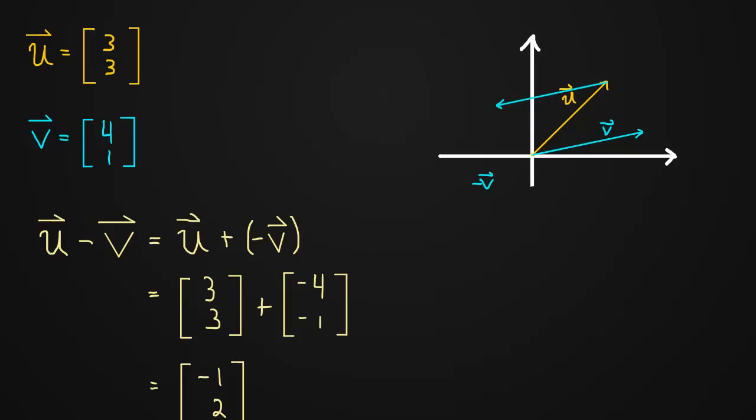And we get to this new vector, u minus v. There's our new vector.